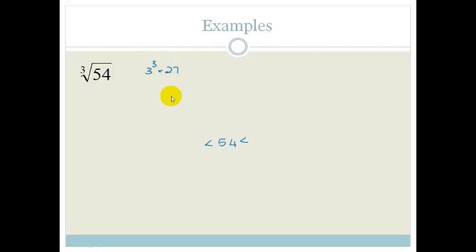What is 4 cubed? 4 cubed, I think it's 64, but let's just check. Yes, it's 64. Do you agree that 54 lies between 27 and 64? Therefore, we know that this has to be 27 and this has to be 64.